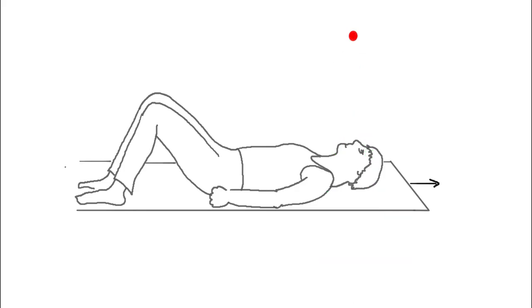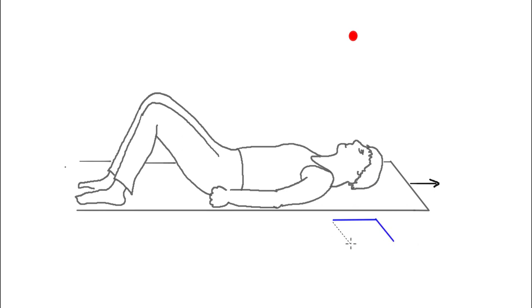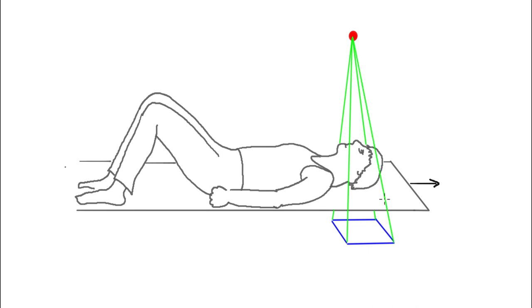The next topic is cone beam CT, CBCT. We'll take the fan beam geometry and replace it with a 2D detector acquiring radiographs — projection images — at a bunch of different angles. Typically we'll get 700 of these images through the course of a scan. Just like before, the source rotates and the panel rotates.